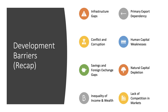There are many development traps that countries have to overcome, particularly low and middle income countries, ranging from inadequate infrastructure, primary product and primary export dependency, the debilitating effects of conflict and corruption, weaknesses in human capital — very important — as well as savings and foreign exchange gaps, the environmental impact of natural capital depletion, the consequences of high levels of income and wealth inequality, and a lack of competition and contestability in markets. Having some examples to hand can make a big difference to understanding how countries are trying to tackle and address some of these development barriers.